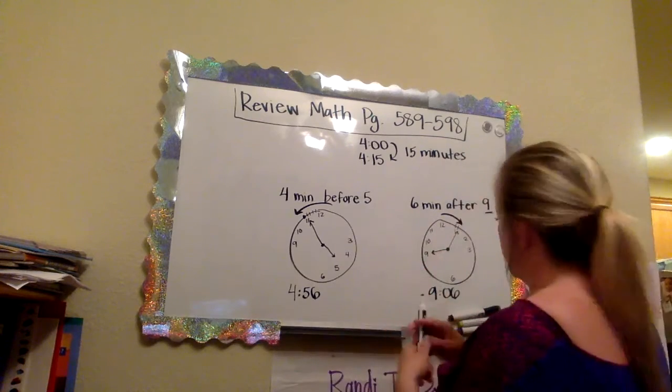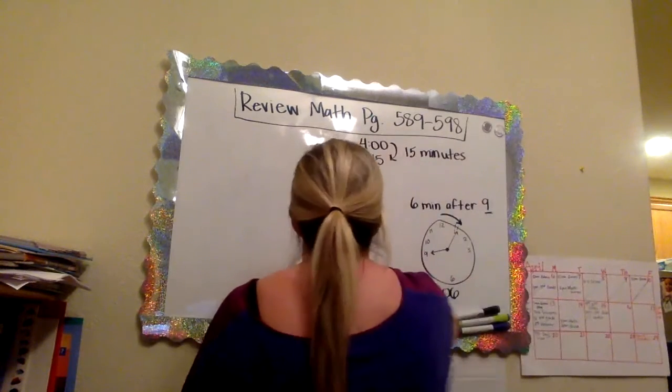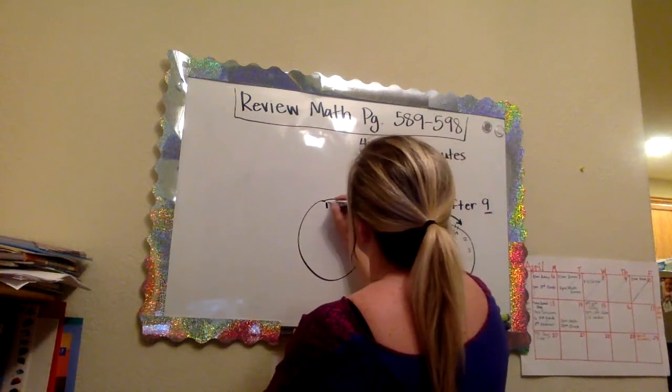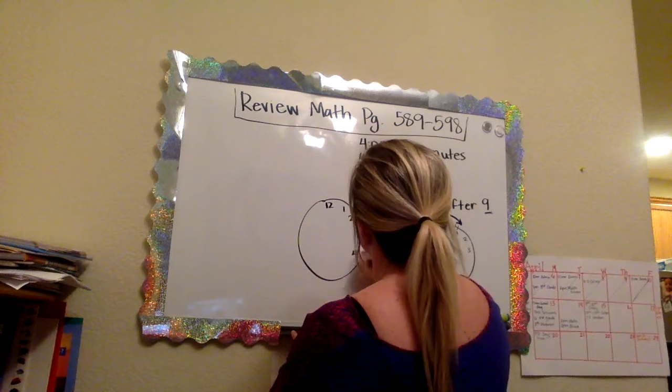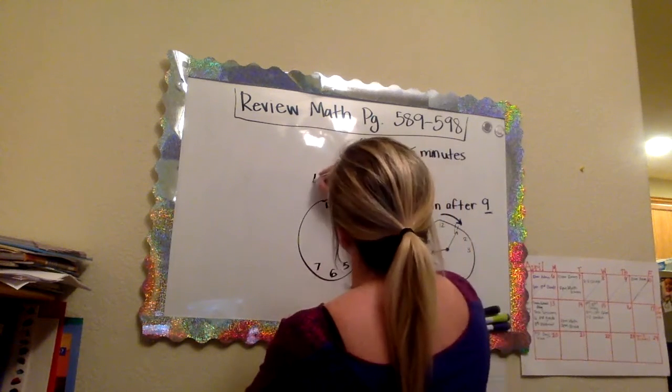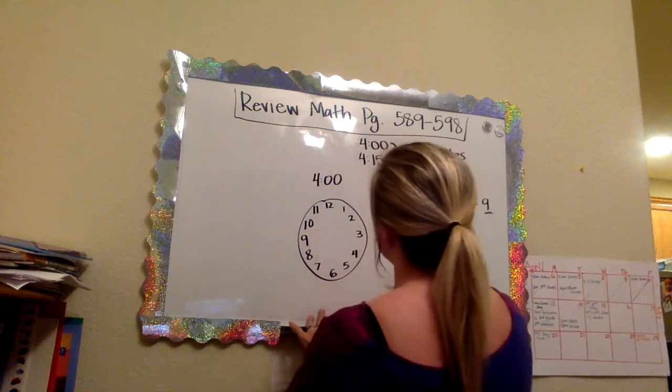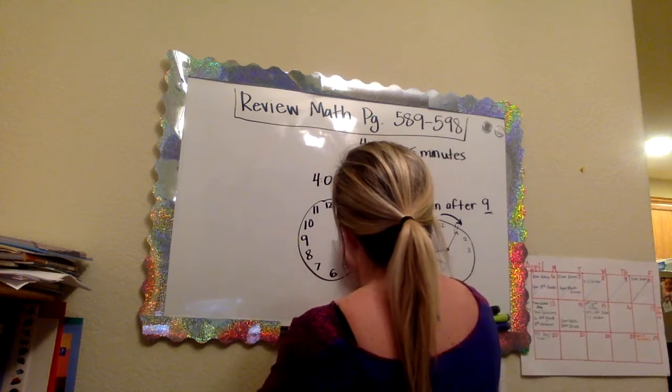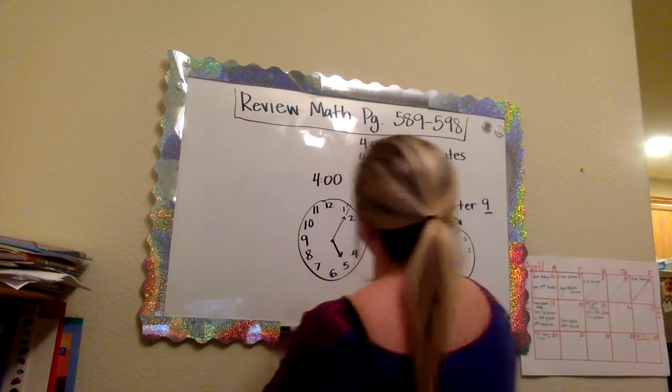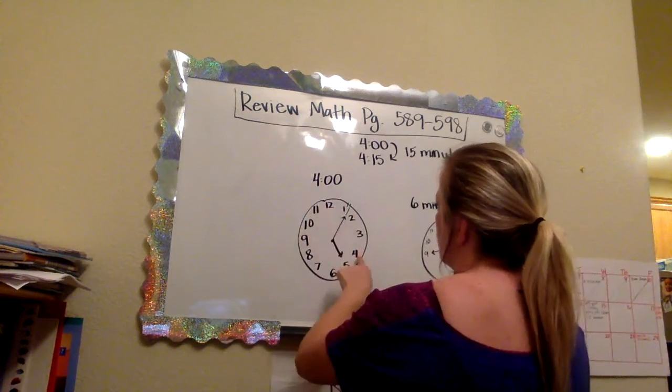On a clock, it would look like this. Let me get my eraser. So the book will say, she started her homework at, let's just say, four o'clock. When she was done with her homework, so she started at four o'clock. When she ended with her homework, it was right there. Okay, so then we know we're going to start at four o'clock.